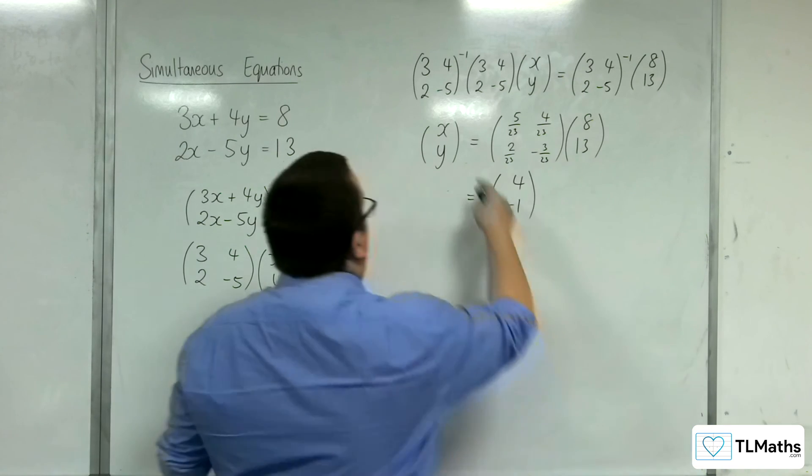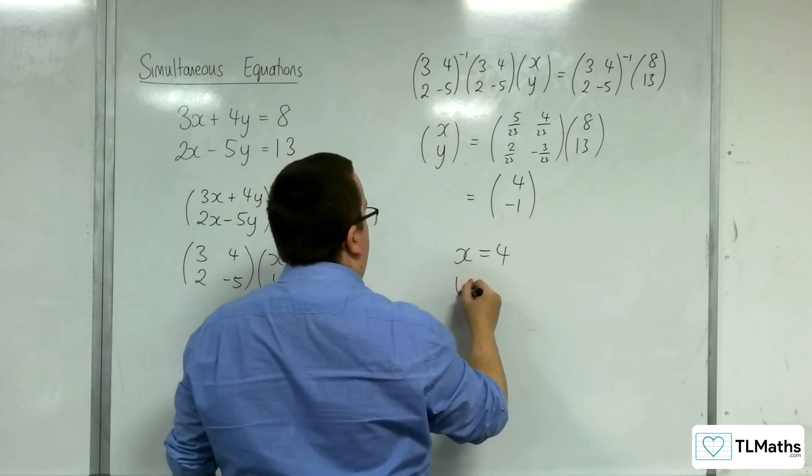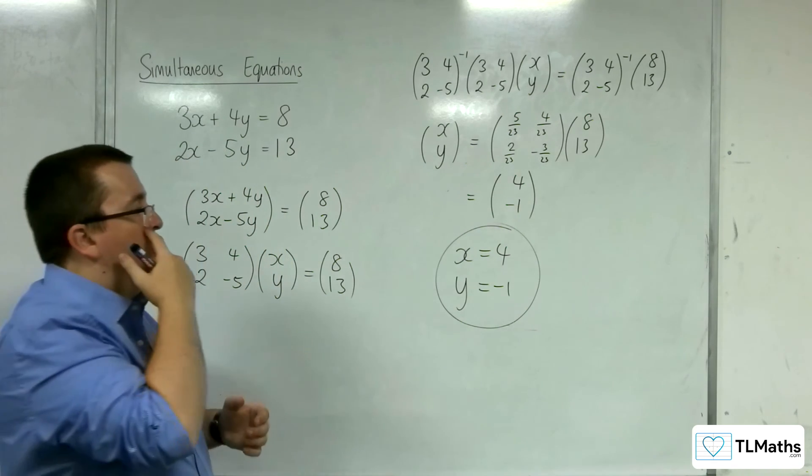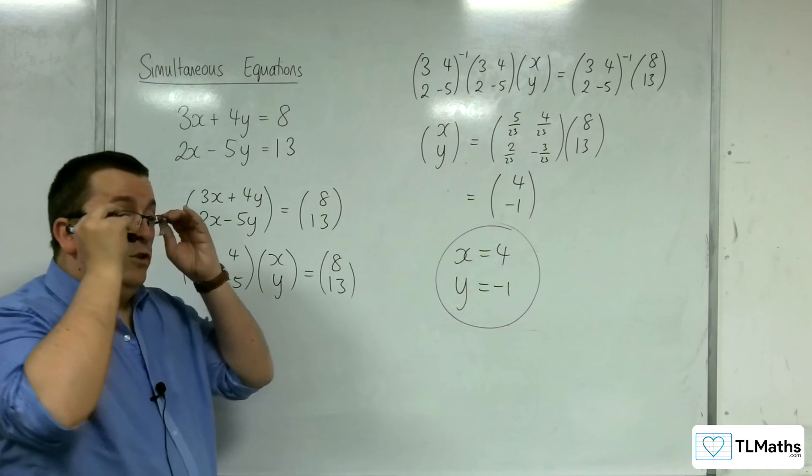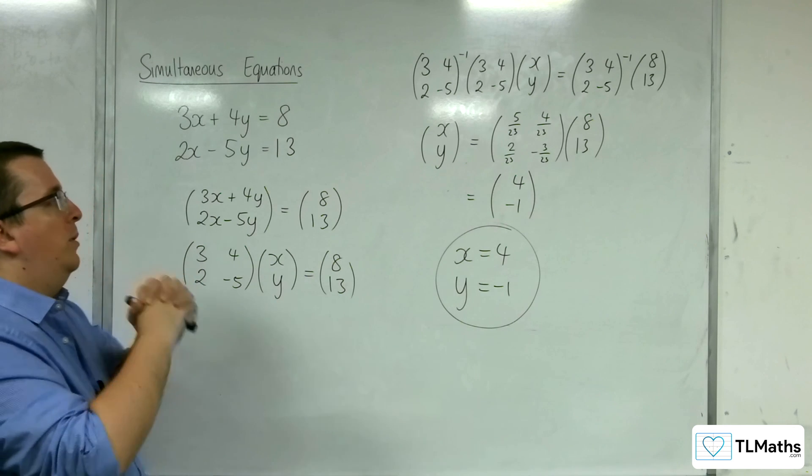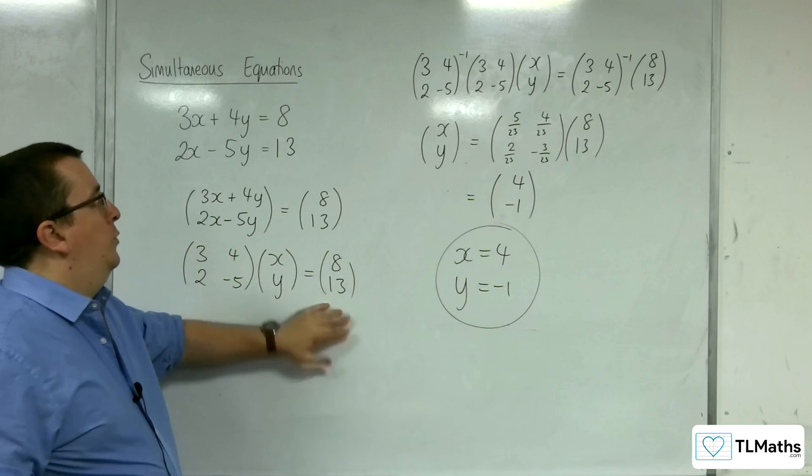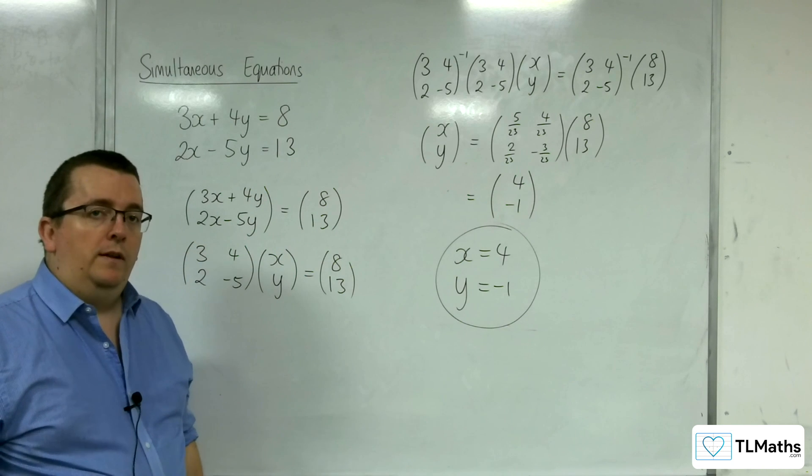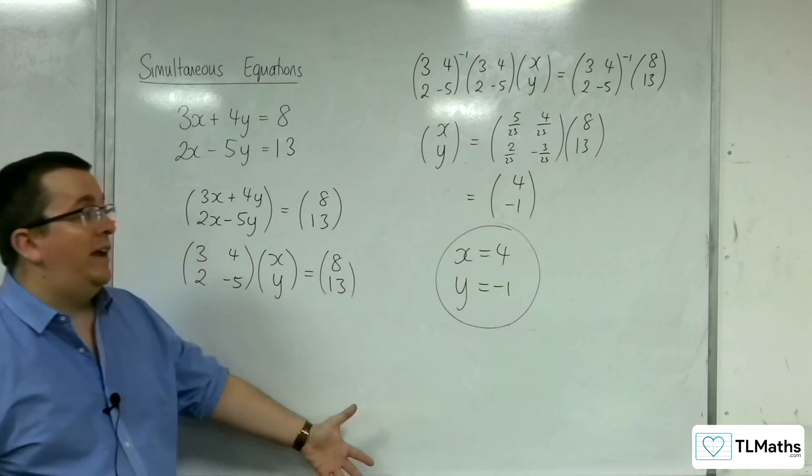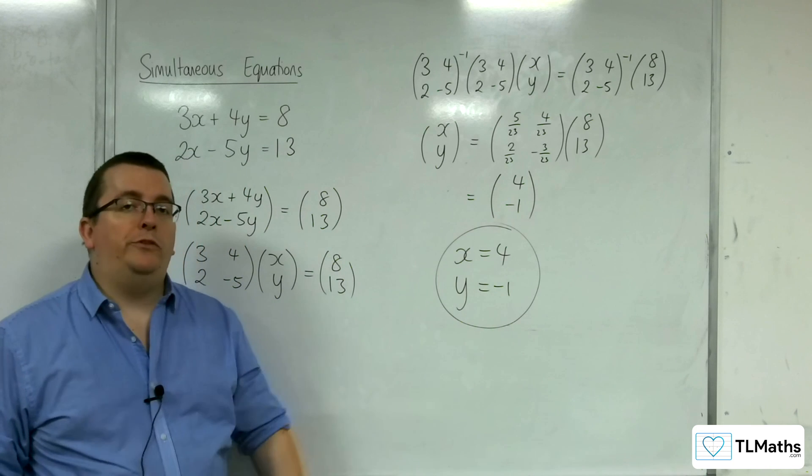So that means that the x is 4 and the y is negative 1. And there we have the simultaneous equation solved. Now, it looked like a lot of work. Okay. But it's understanding that if I apply the inverse matrix of the coefficients to the right-hand side matrix, then I can solve the simultaneous equations. And as I said, you could trade this up to 3 by 3, 4 by 4, 5 by 5, and it would still work.